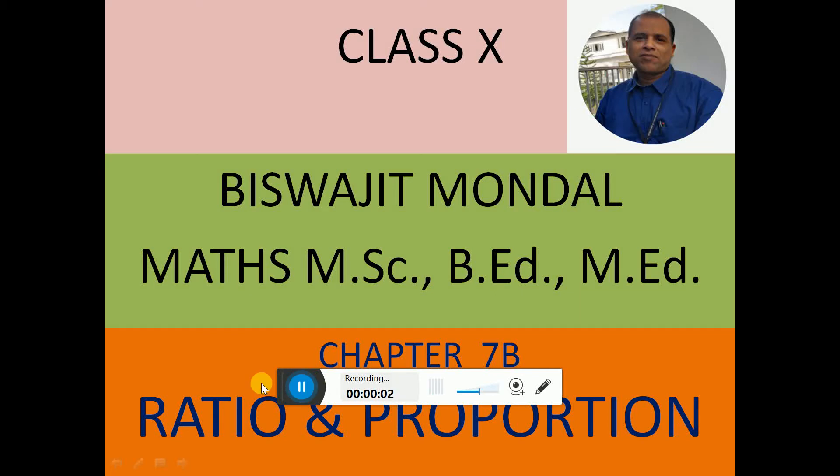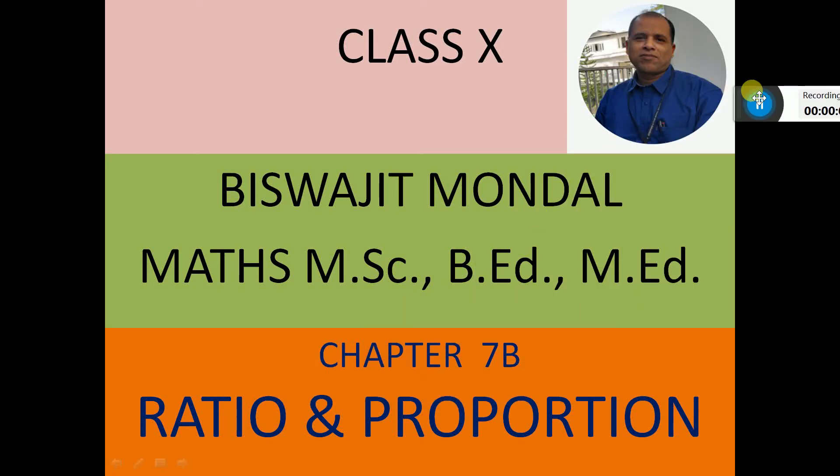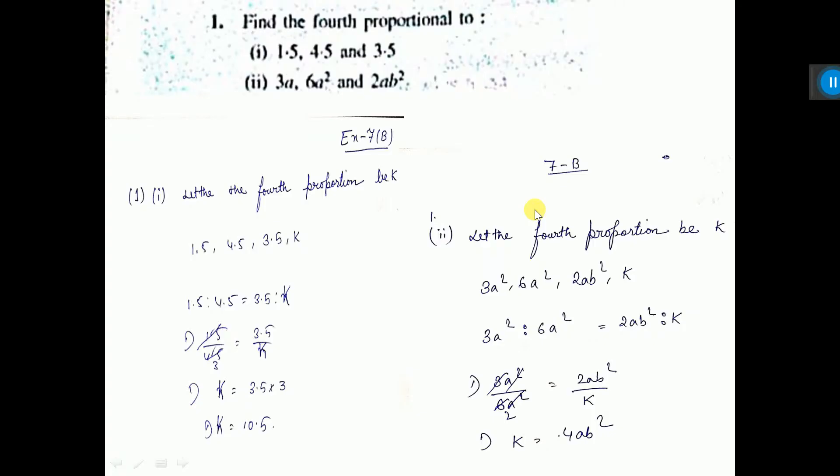Ratio and proportion I have explained. Let us now do sum number 1. Find the fourth proportional to 1.5, 4.5, and 3.5.